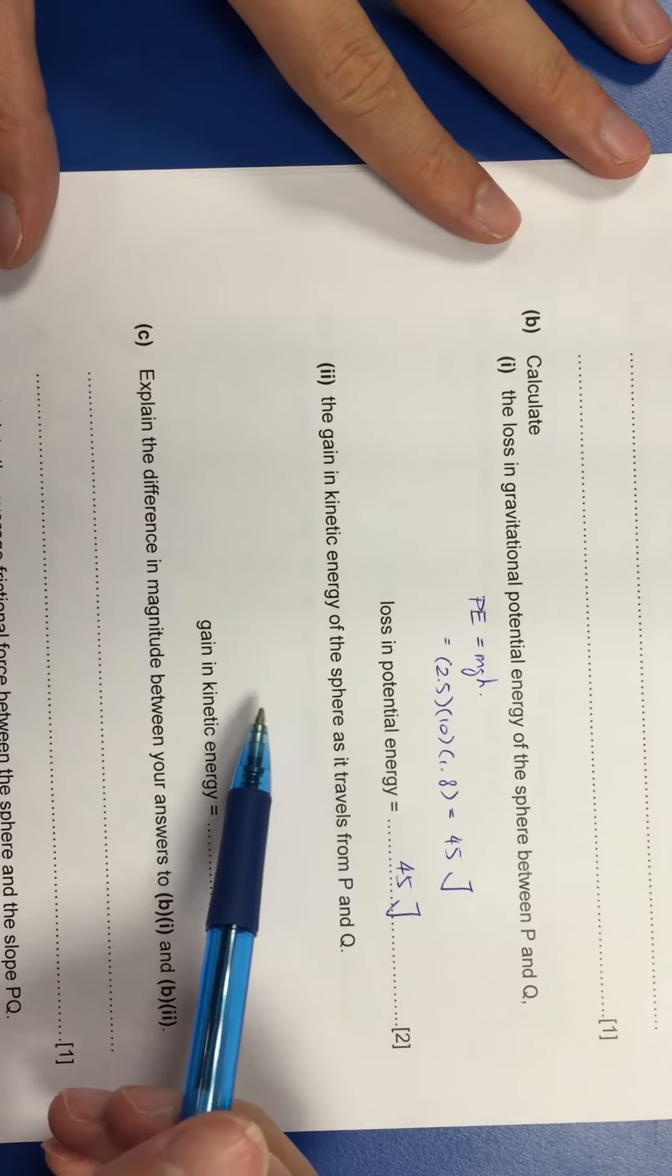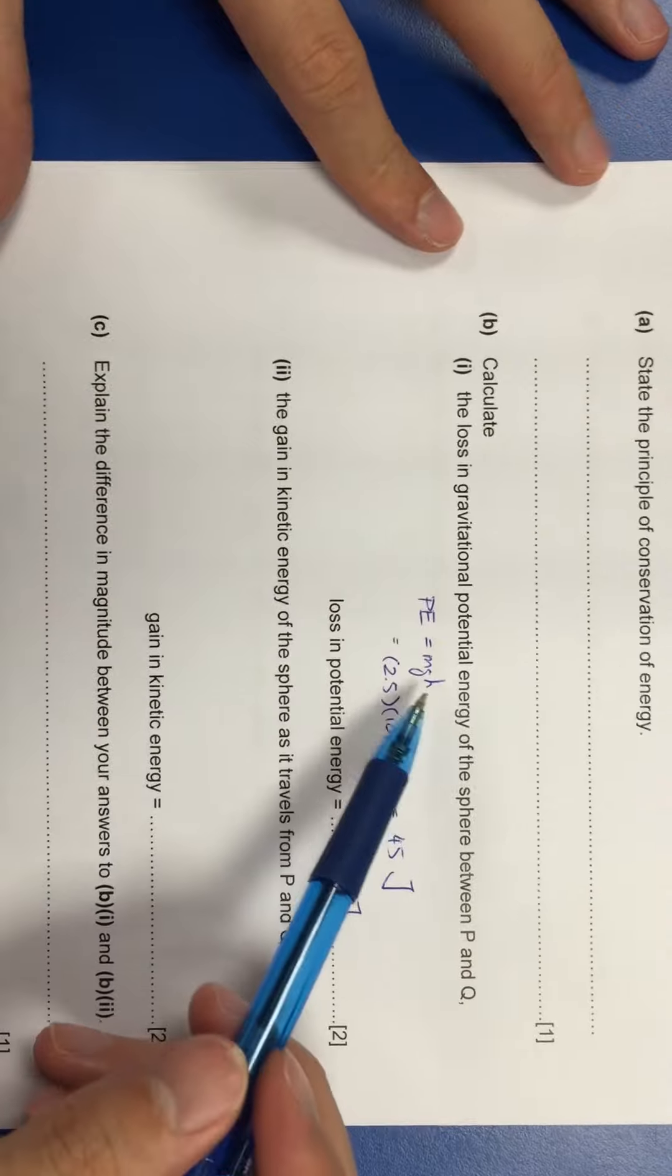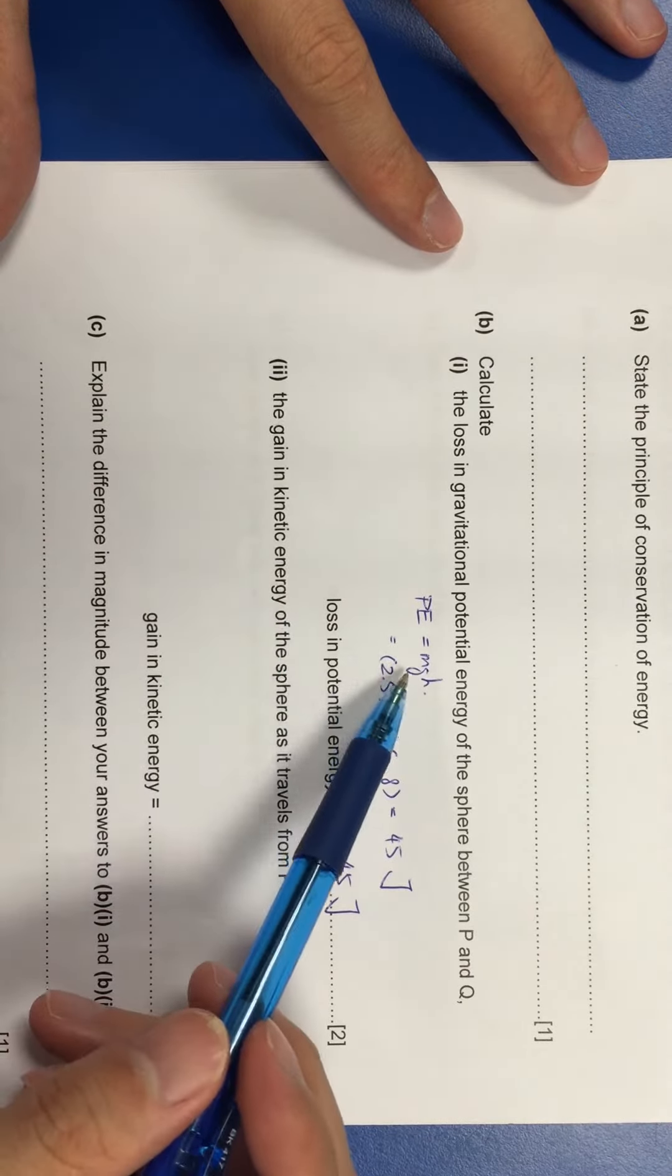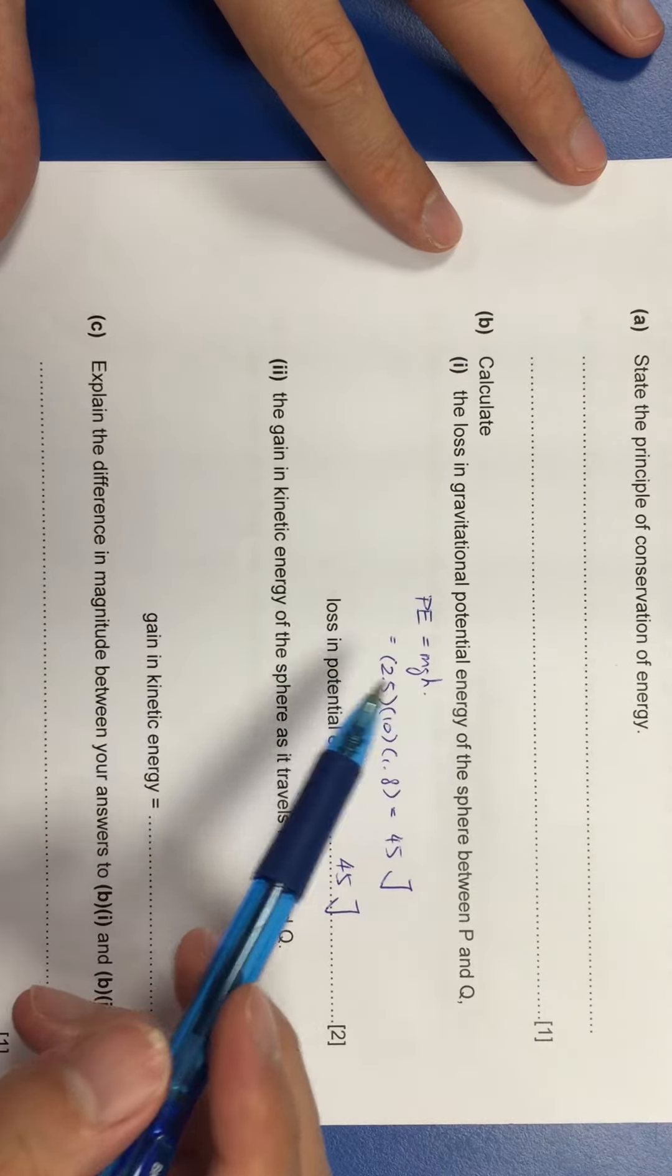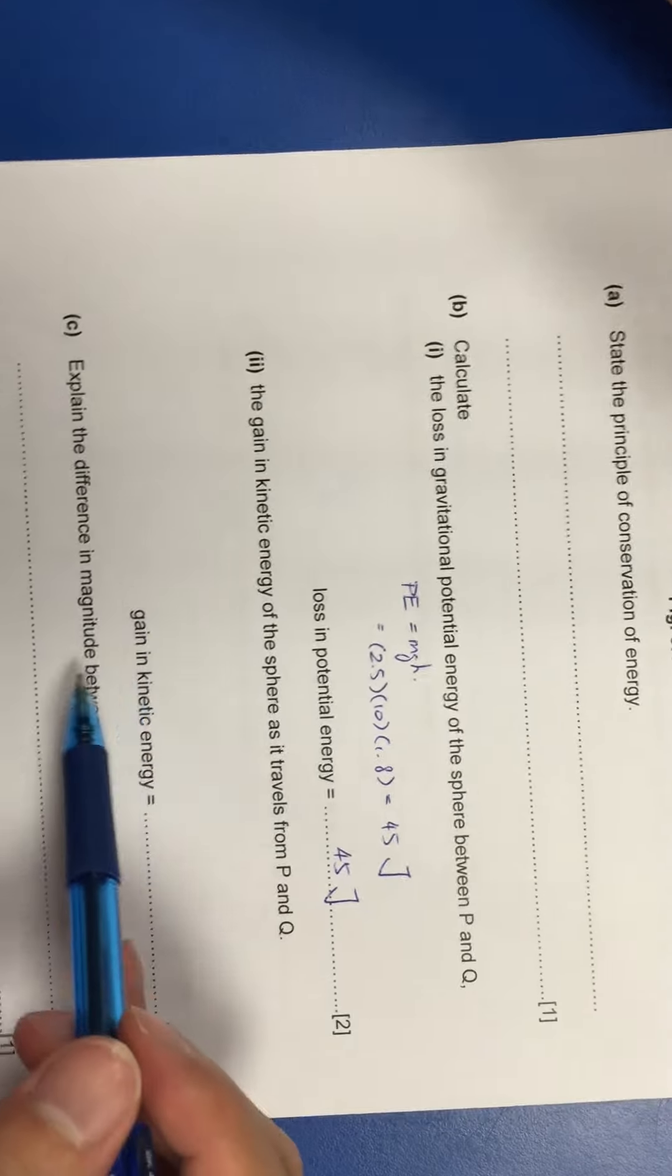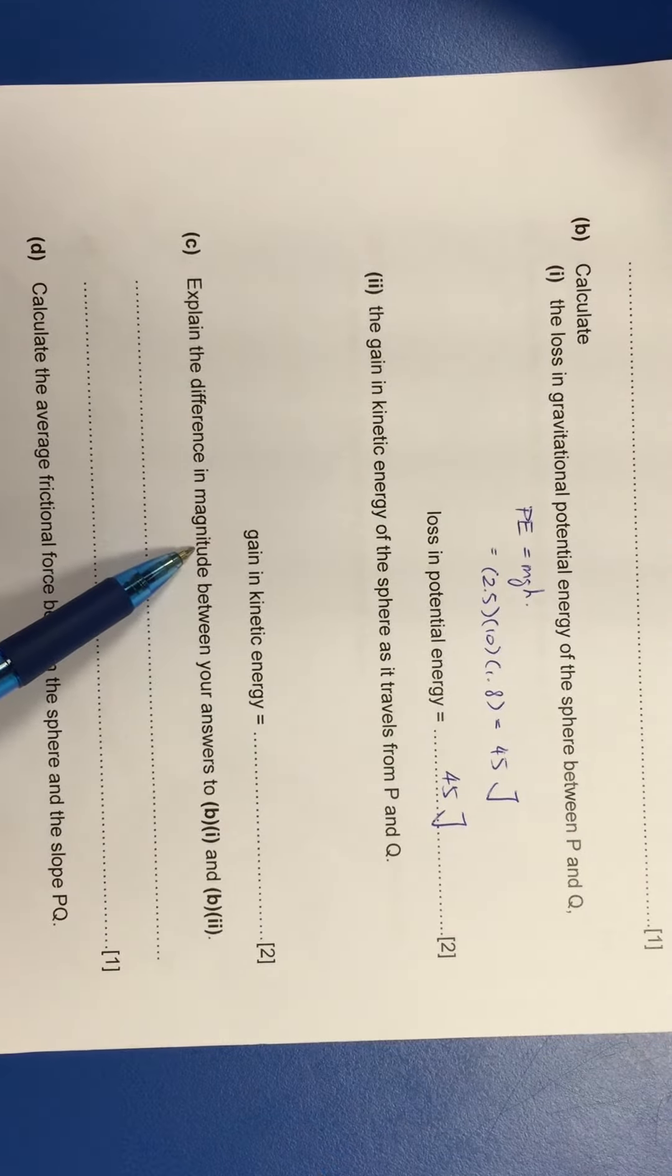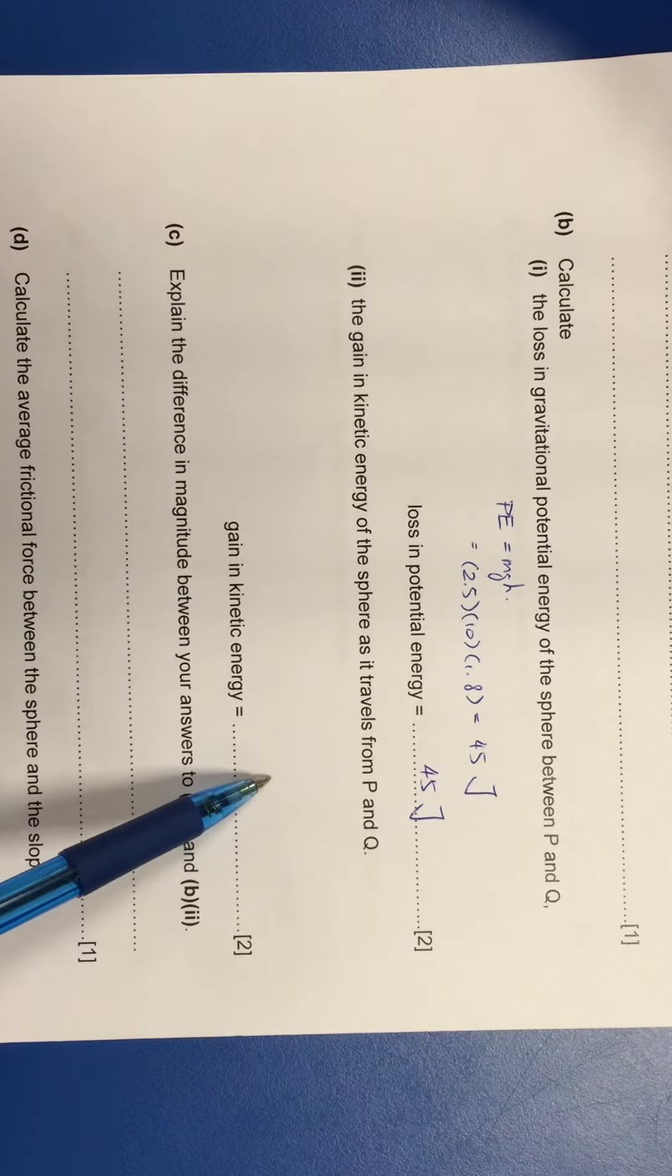The reason why I paused just now is because if I am assuming the loss in PE is equal to the gain in KE, I am assuming there is no energy loss. But I got a feeling that there is energy loss because of part C. You see? They already hinted to you that B part 1 and B part 2 is different. So I know that I cannot just put 45 here.